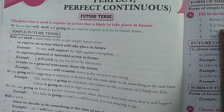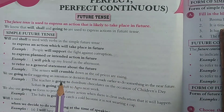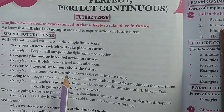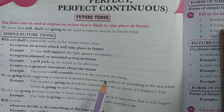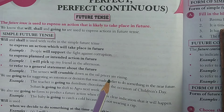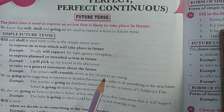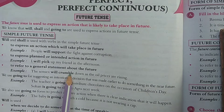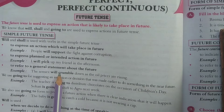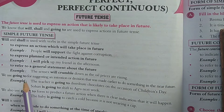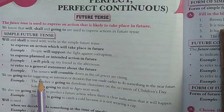The third use is to refer to a general statement about the future — statements that are almost universally understood to happen. For example: 'The Sensex will crumble down as the oil prices are rising.' This is understood: as oil prices go up, the market is affected and the Sensex comes down. These are generalizations about the future.